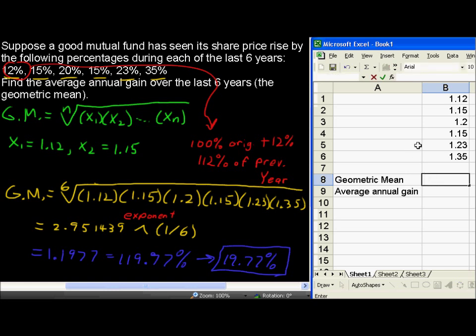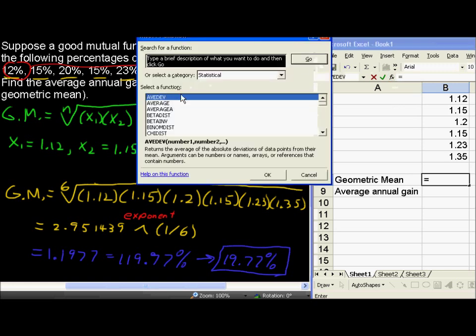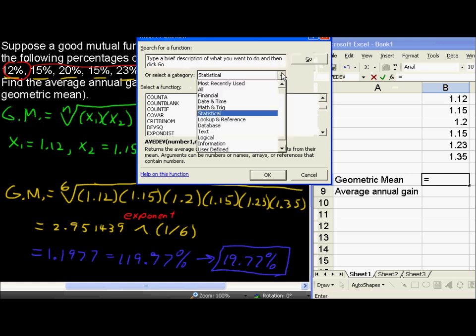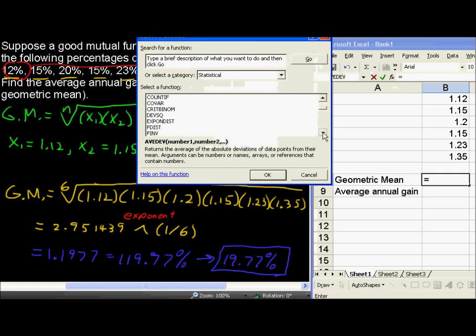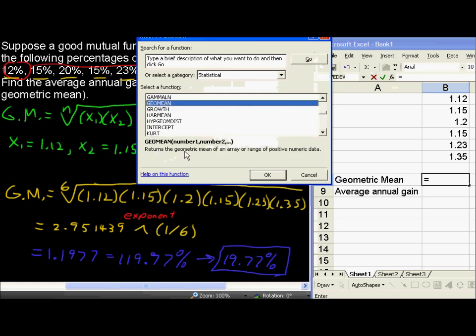But in case you forgot that, or you're doing this later and you forget this, you can always go to the function. So we insert function, and we're going to go down. We're in the statistical category of functions, and we go down, we just look for something that starts with a G. Here's something that looks like it, GeoMean. See if that's right. It returns the GeoMean, it says.